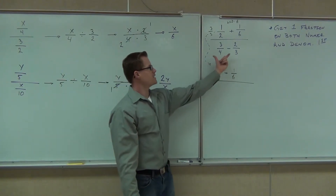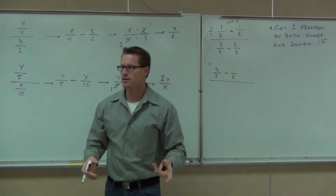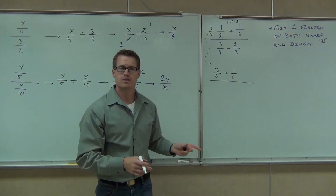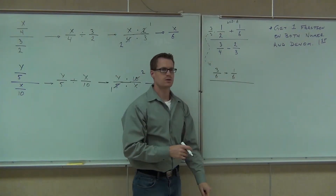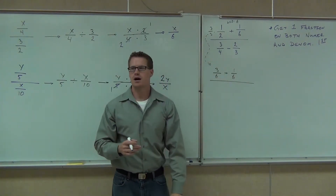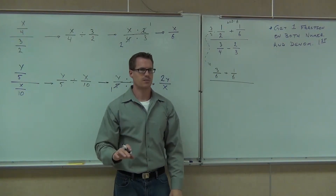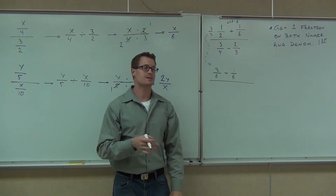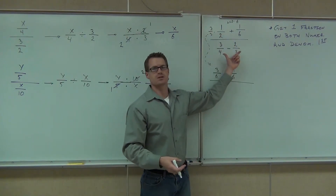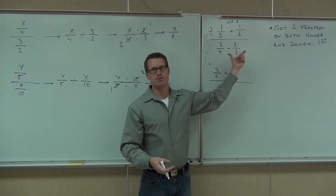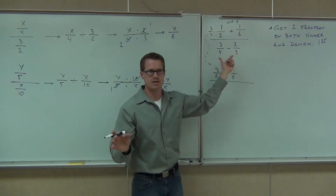Now, the main denominator — I also need a common denominator because I'm subtracting. Can you tell me what is my LCD for three-fourths minus two-thirds? Notice how the LCD does not have to be the same. It really is like doing two problems in one. This is one problem, this is a completely separate problem. You don't need the same LCD.